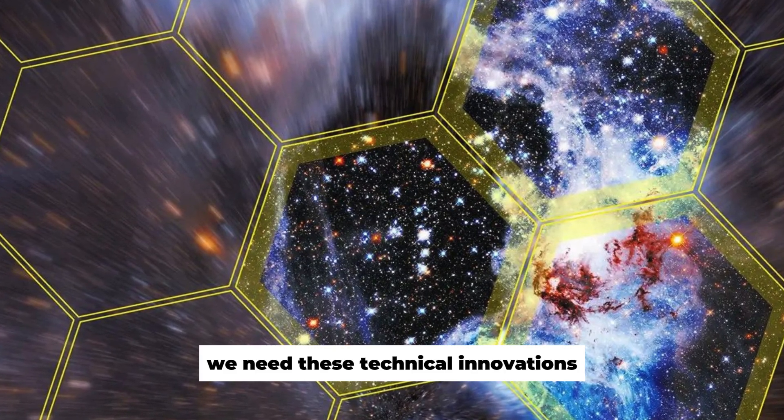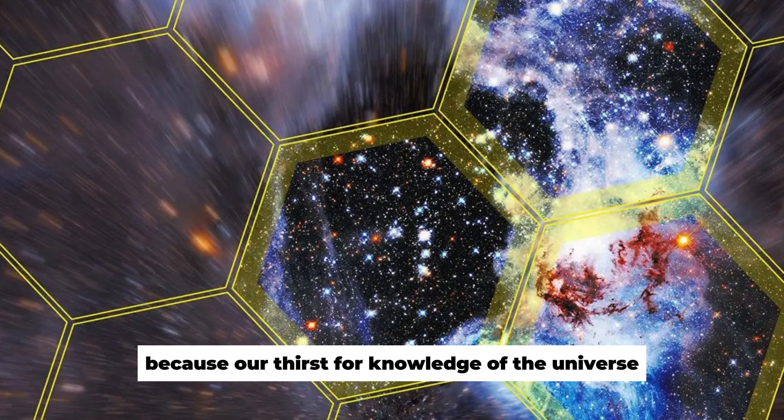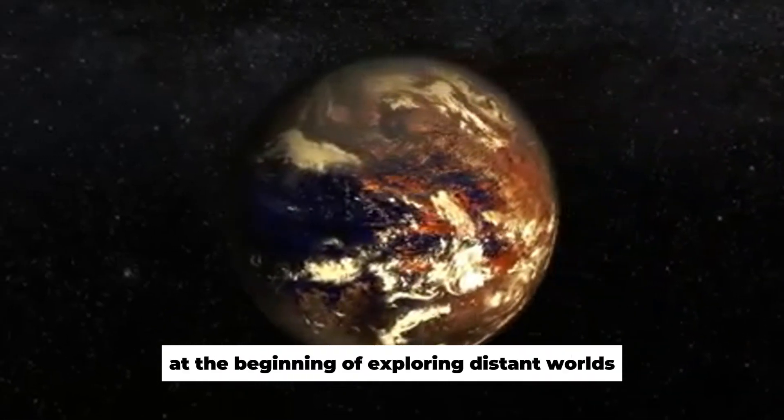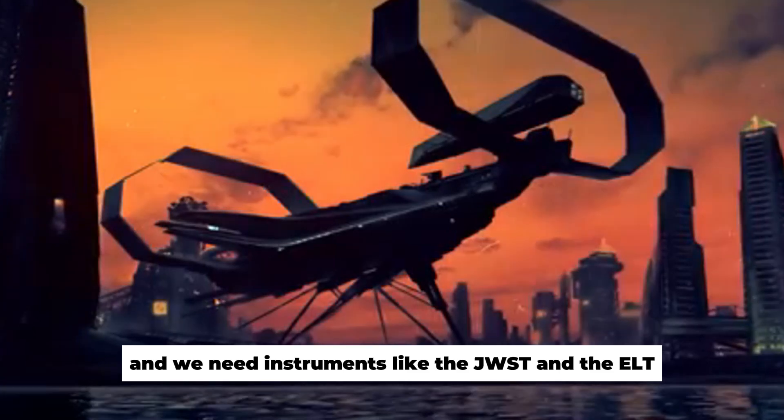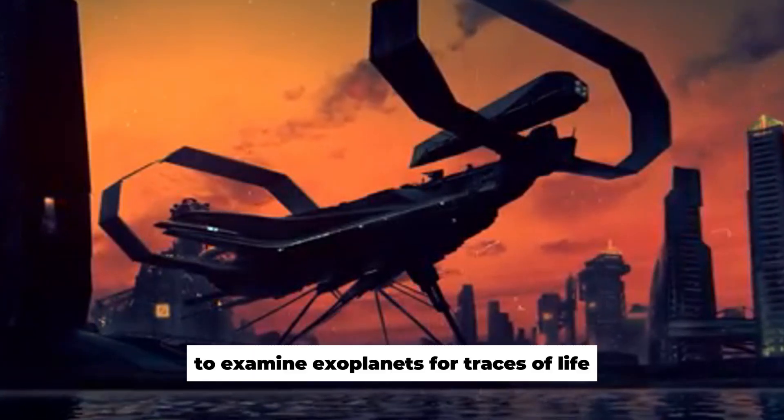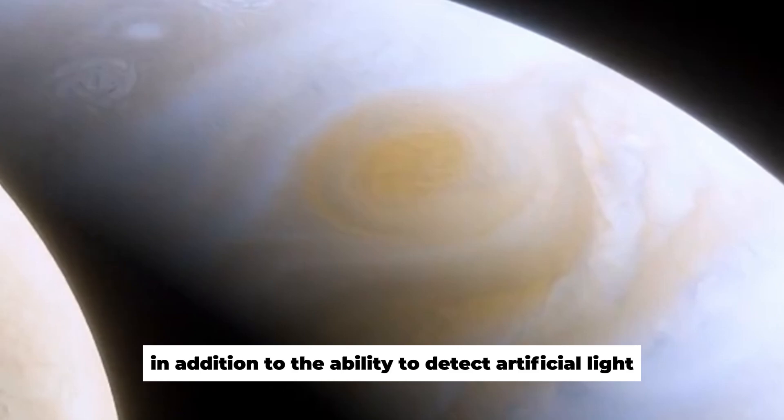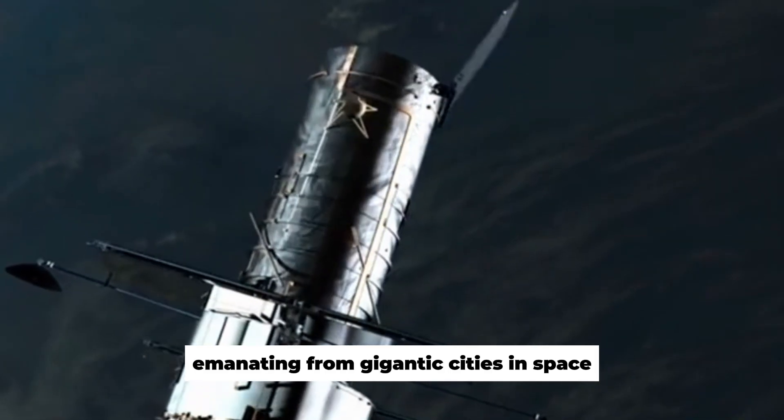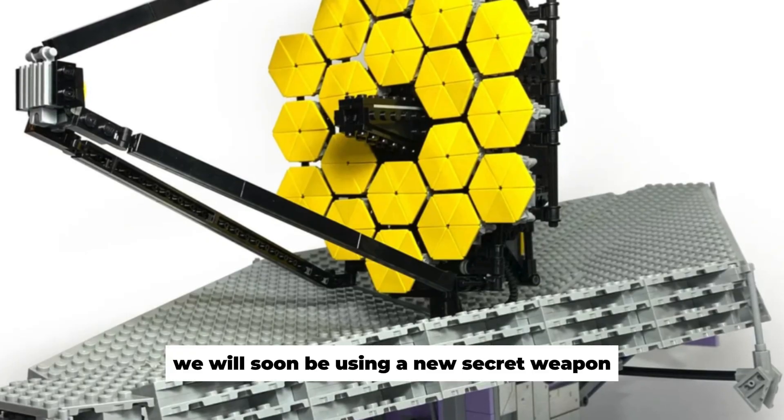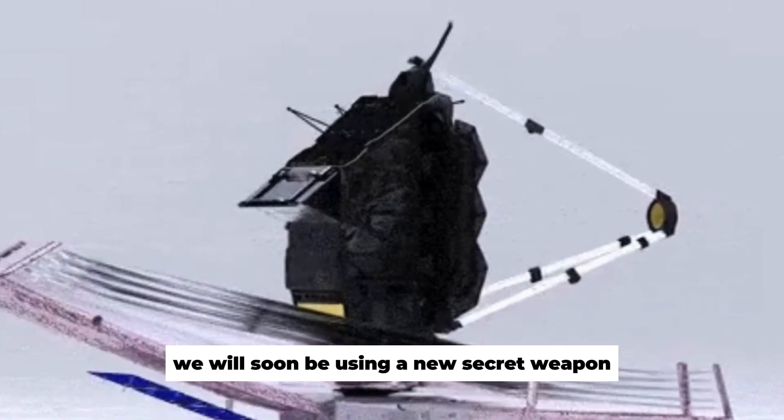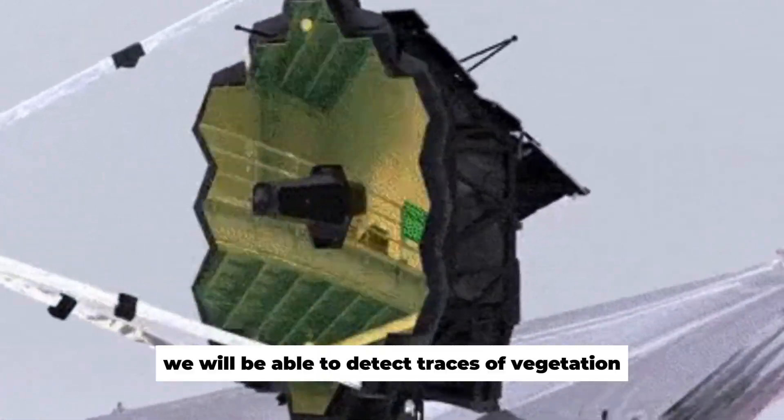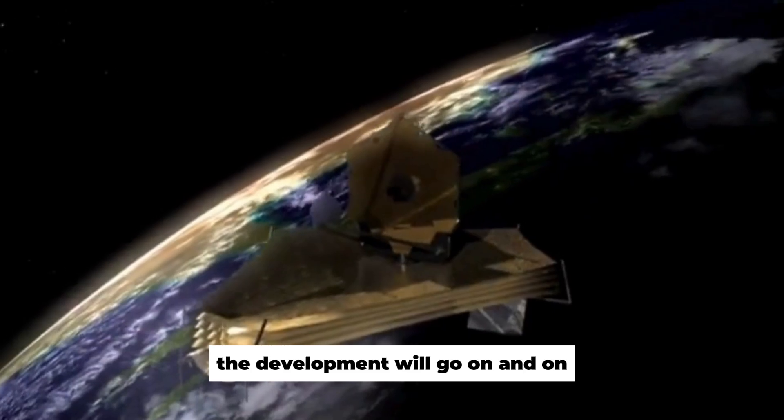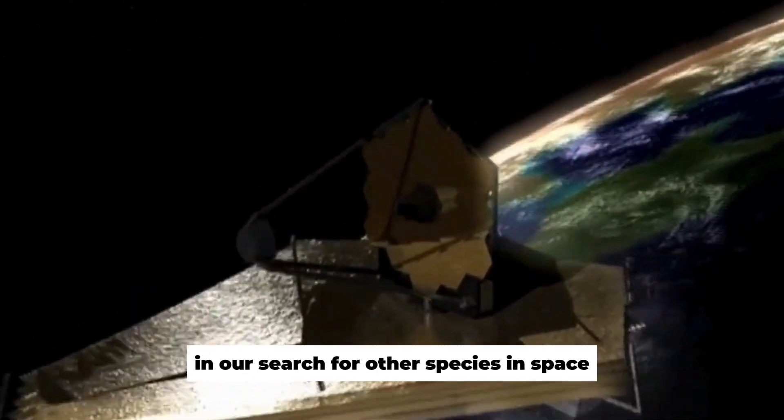We need these technical innovations because our thirst for knowledge of the universe is far from quenched. We are only at the beginning of exploring distant worlds, and we need instruments like the JWST and the ELT to examine exoplanets for traces of life. In addition to the ability to detect artificial light emanating from gigantic cities in space or extraterrestrial airfields, we will soon be using a new secret weapon with the AIR system. We will be able to detect traces of vegetation on distant planets. The development will go on and on in our search for other species in space.